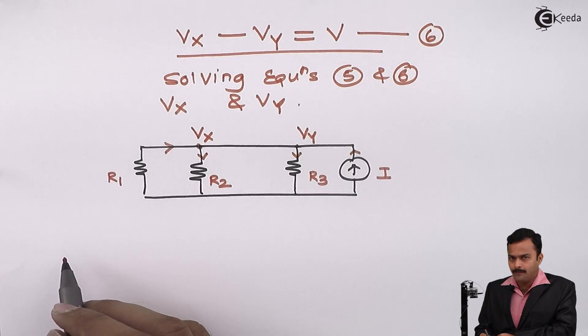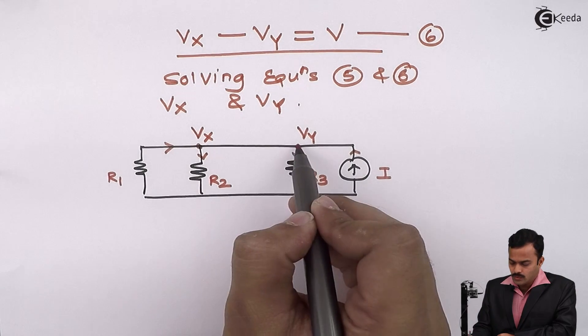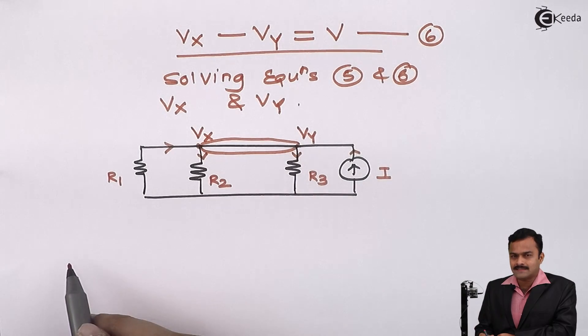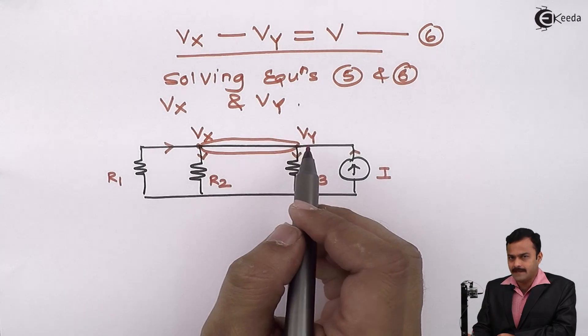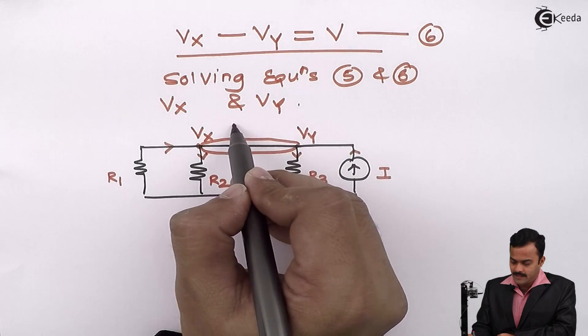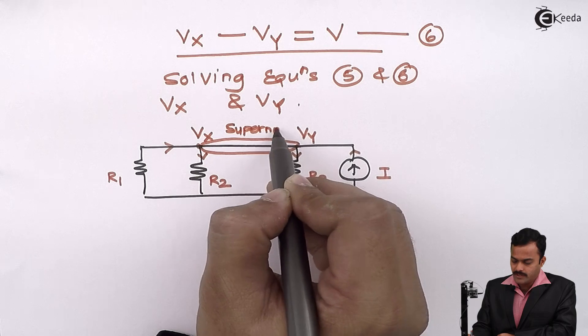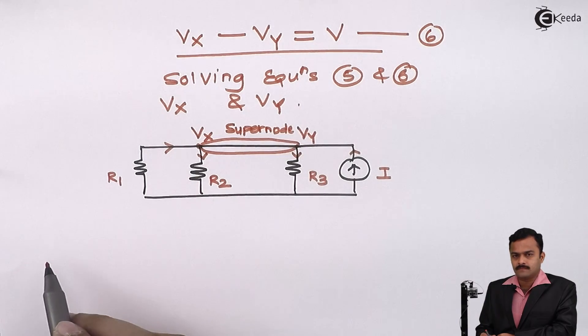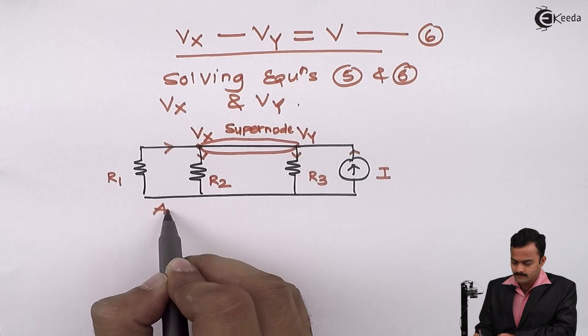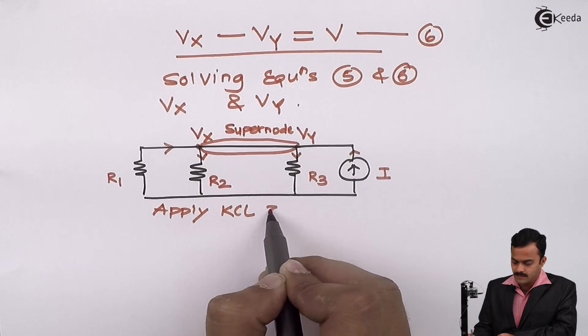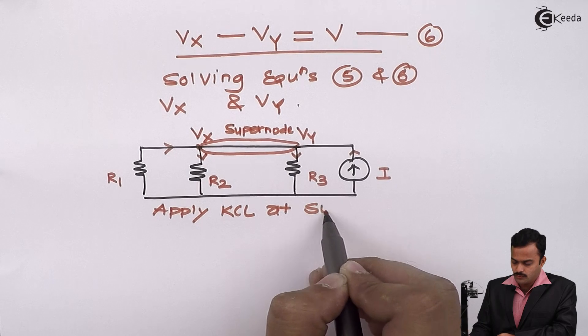And current directions I will keep same as the original circuit. And now I will apply KCL to this node which we consider as arbitrarily same. I will name it as super node. It's a combination of two nodes. So let's apply KCL at super node.